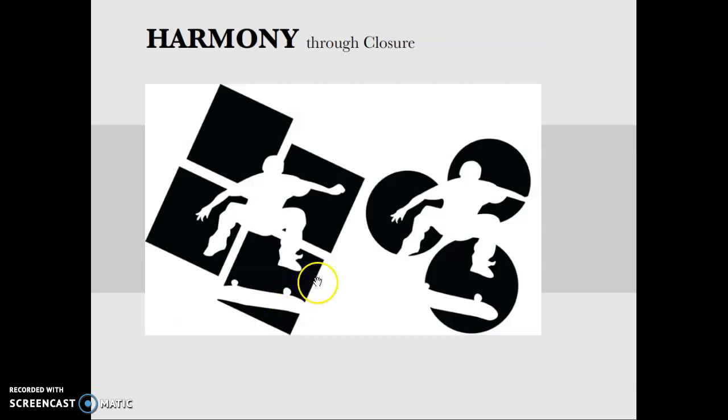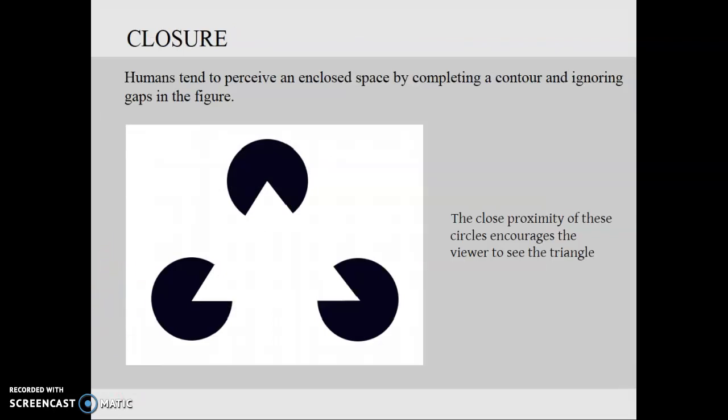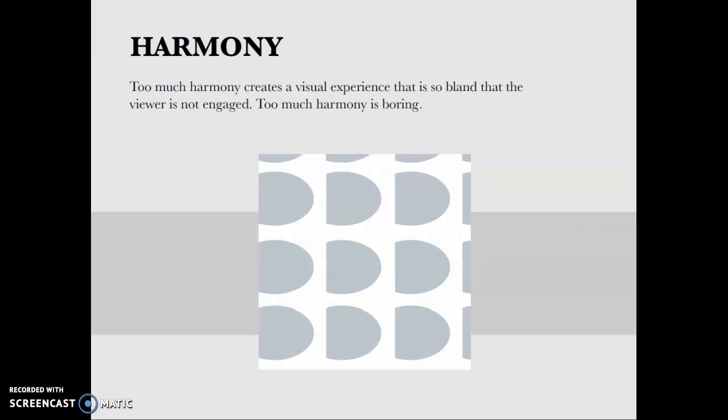Harmony can be created by closure. Closure is creating an implied completeness by the eye of the viewer. Observing parts but perceiving the whole. If these dark circles were farther away, it would be harder to see the negative space in here, and the closure that's being created wouldn't be as strong. Humans tend to perceive an enclosed space by completing a contour and ignoring the gaps in the figure. The close proximity of these circles encourages us to see this triangle. Too much harmony creates a visual experience that is so bland that the viewer is not engaged. Too much harmony can be boring.